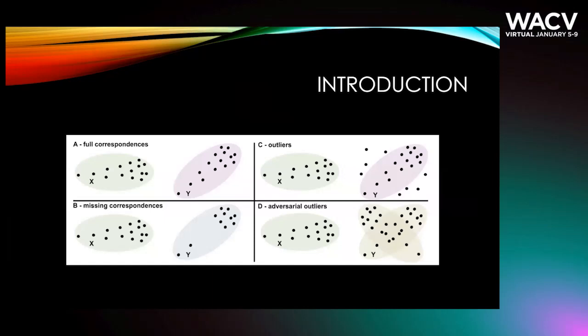Here are the four scenarios that I just talked about. Either we have the full correspondences, every point in X has a correspondence to one point in Y. Case B is where we miss some of the correspondences, the point set Y does not have some of the points that are in point set X. And case C is where we have outliers, meaning that there are some points in Y that have correspondences in X, but there are some points that do not have any correspondences.